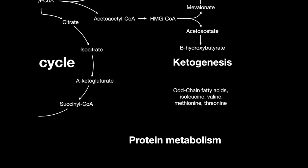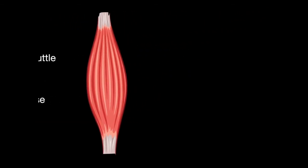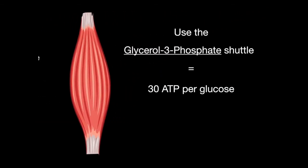Proteins can be catabolized by entering the TCA cycle at succinyl-CoA. The heart and liver use the malate-aspartate shuttle to transport the impermeable NADH into the mitochondria, producing 32 ATP per glucose molecule at the end of oxidative phosphorylation. In the muscle, the glycerol-3-phosphate shuttle is used instead and yields just 30 ATP per molecule of glucose.